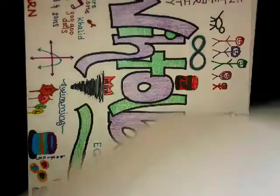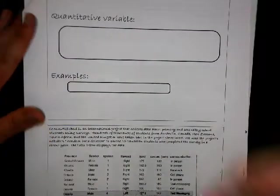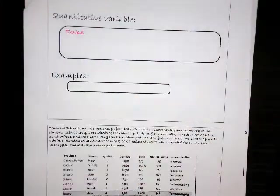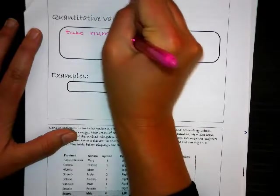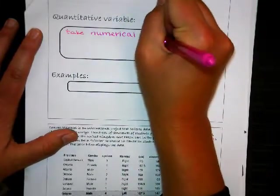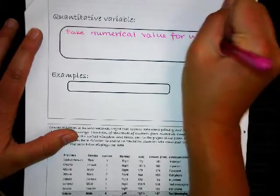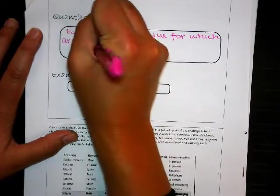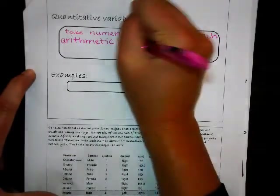So then our other type of variable is quantitative, and this we use numbers for. Quantitative variables take numerical value, and that's just a fancy way to say that if we found the average it would actually make sense. We're not going to find the average favorite color, but we would find the average income or age.